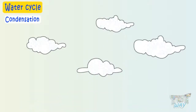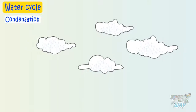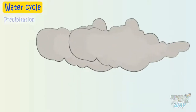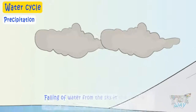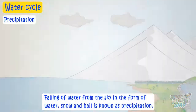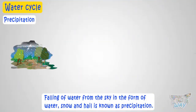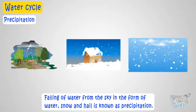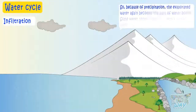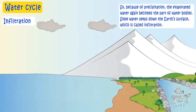It's the clouds that result in different forms of precipitation — that is, falling of water from the sky in the form of water, snow, or hail. Because of precipitation, the evaporated water again becomes part of the water bodies.